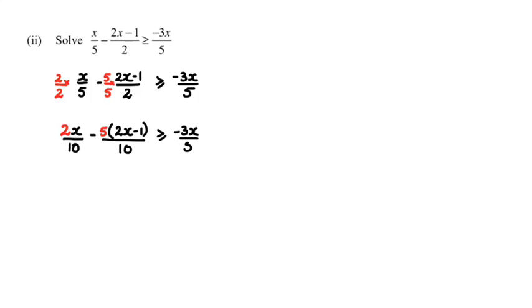Please be careful with that minus 5, because it will affect the entire bracket, the entire (2x-1). So you're going to have 2x minus 5 times 2x, which is 10x, and then negative 5 multiplied by negative 1 is positive 5, all divided by 10. Simplifying the left-hand side, 2x minus 10x gives me -8x+5 over 10.